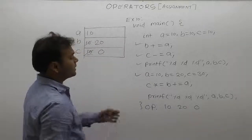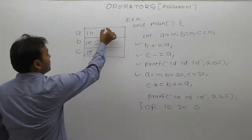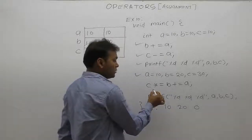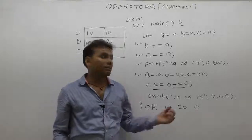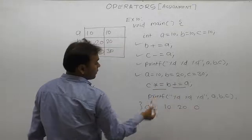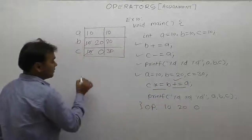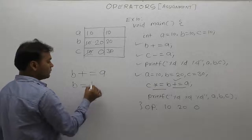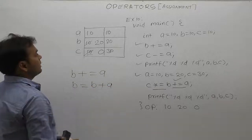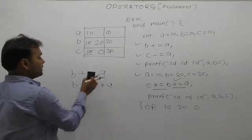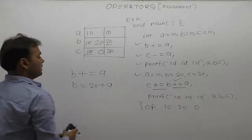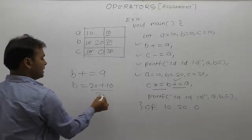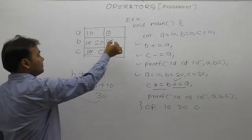Next, we are re-initializing a, b, c with different values: value of a is 10, b is 20, and c is 30. For this second expression, we are using two compound assignment operators: multiply-equal and plus-equal. According to associativity rules, we solve plus-equal first. The first operand is b, and second operand is a. It is equivalent to b equals to b plus a. Value of b is 20, value of a is 10, so the result is 30. Now b becomes 30.